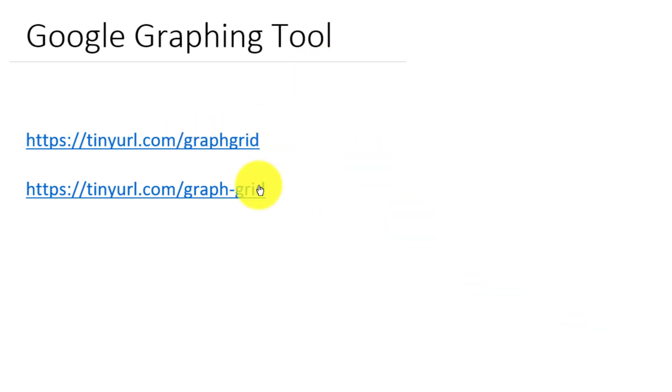So there are two versions of this Google graphing tool that are linked here using tinyurl. One is graph-grid. It has a numeric grid so that you can easily graph particular points. And graph-grid does not have a grid. I'm going to use graph-grid in this one. The links to these will be in the description of the video.